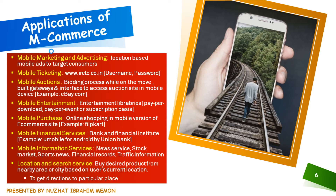Next is mobile entertainment. Users need to subscribe to entertainment libraries to search for songs, videos, or games and easily download them to their mobile for playing later. Entertainment services such as pay per download, pay per event, or on a subscription basis can cater to a large number of mobile users. Pay per download means you pay for every download; pay per event means you pay for a particular live event or live session; and on a subscription basis, you subscribe to enjoy live streaming for a few days or months.